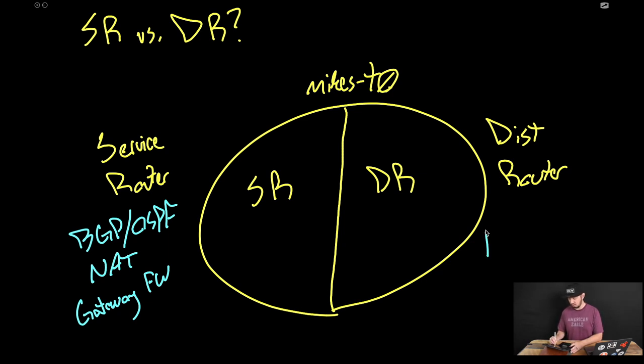The distributed router is essentially responsible for routing east-west. So that is really the purpose of the distributed router.